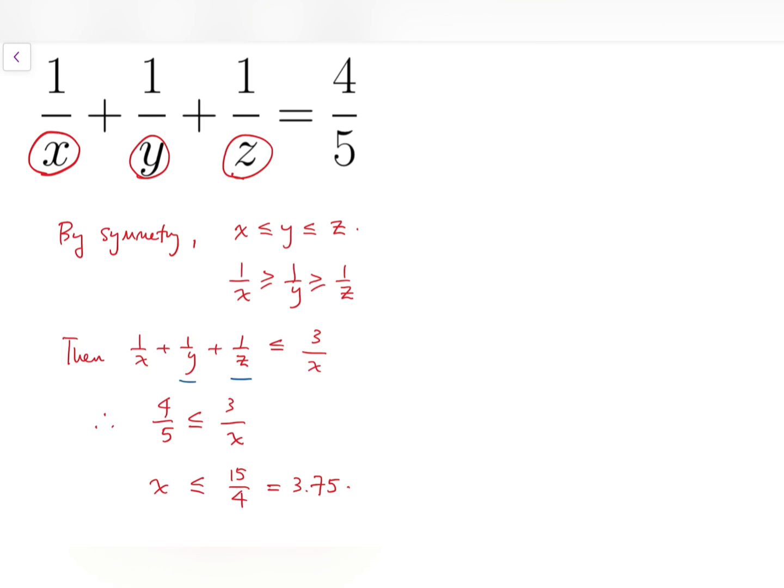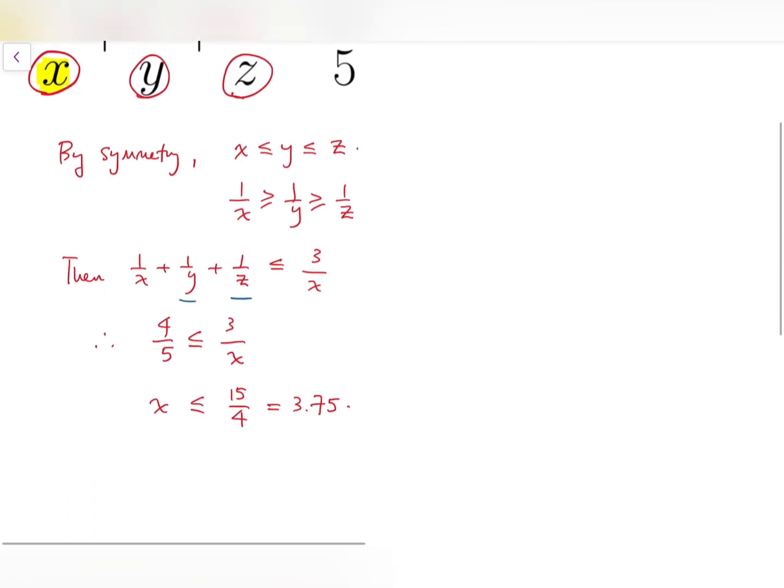So that means our smallest number has no choices other than 1, 2, or 3. But of course, we can't have x equals 1, because if we put it into the equation, then 1 over 1 plus some 2 positive fractions equals 4 fifths. But that is impossible, because 1 itself is larger than 4 fifths.